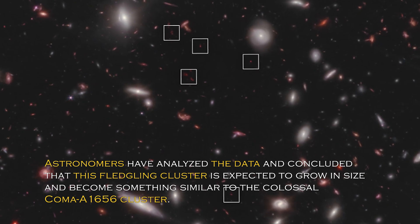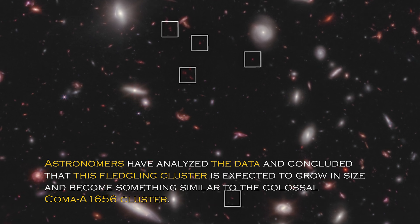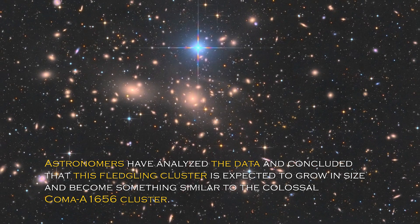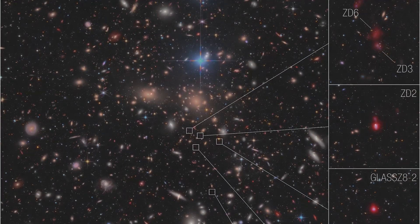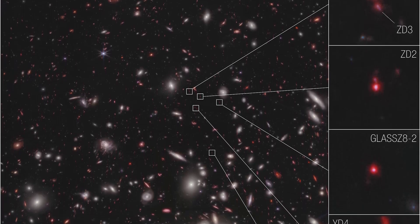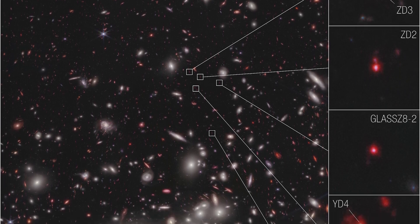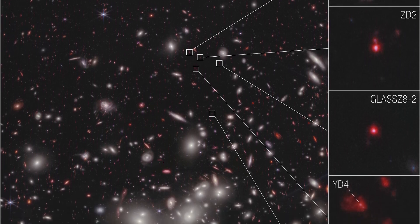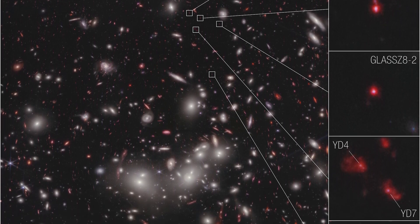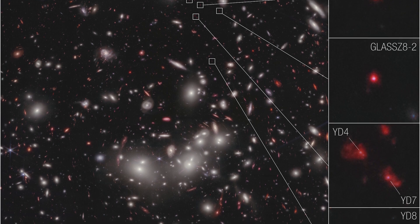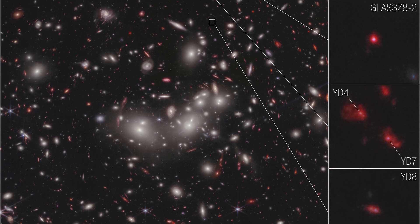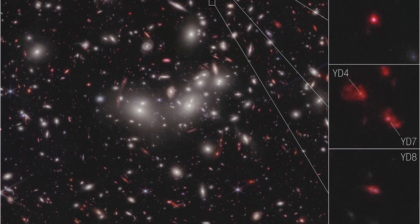Astronomers have analyzed the data and concluded that this fledgling cluster is expected to grow in size and become something similar to the colossal Coma A1656 cluster. The place where all this is taking place is unique and special, as it is in an area of accelerating galactic evolution thanks to the James Webb Space Telescope. Now researchers can measure the velocities of these seven galaxies, which gives them the confidence to confirm that they are bounded together in a protocluster. To put this in perspective, NASA scientists compared these distant galaxies to small drops of water in different rivers that will eventually join together to form a large, powerful river.